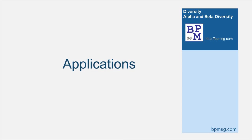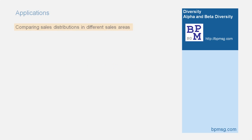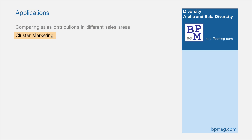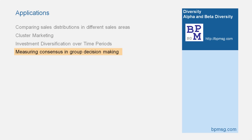The concept of alpha and beta diversity can be very useful in many applications, for example: comparing and analyzing sales distributions in different sales areas, cluster marketing, investment diversification over time periods, or measuring consensus in group decision making.